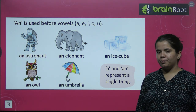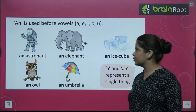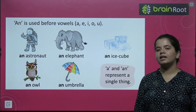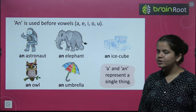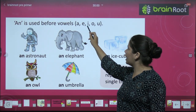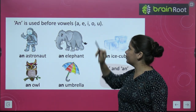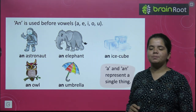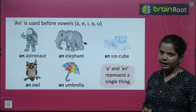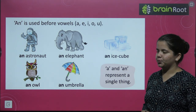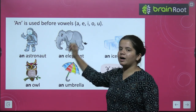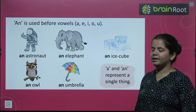An is used before a vowel. We have 5 vowels: A, E, I, O, U. So wherever you have a vowel, there will be An. What will happen? An will happen there.